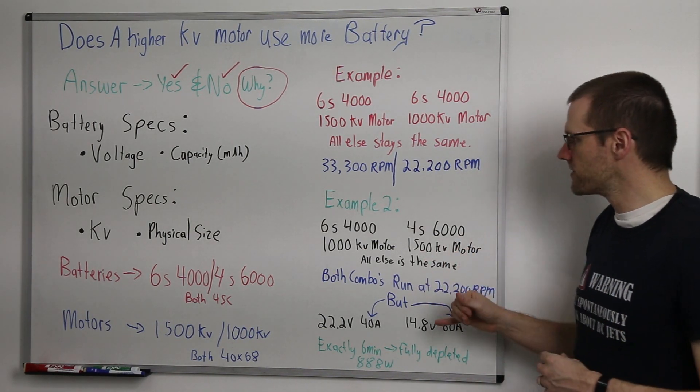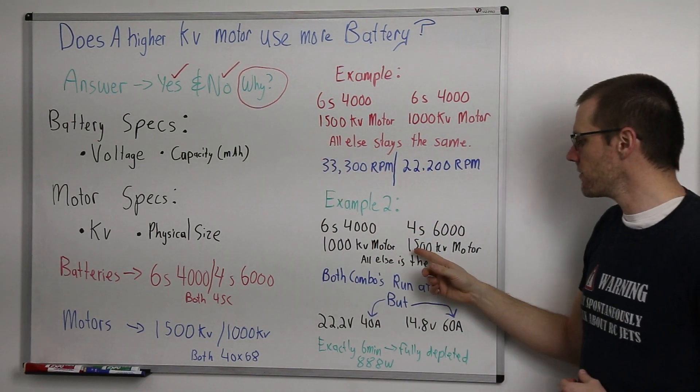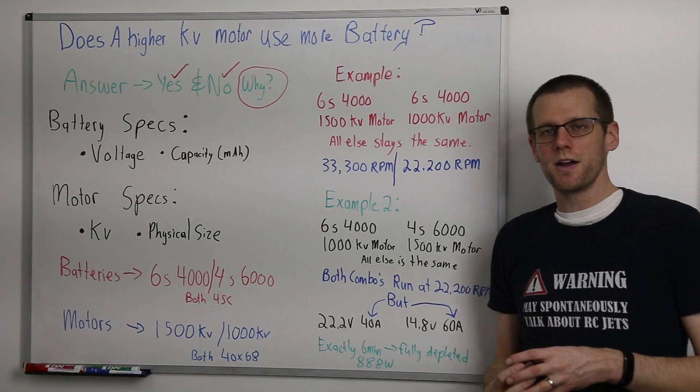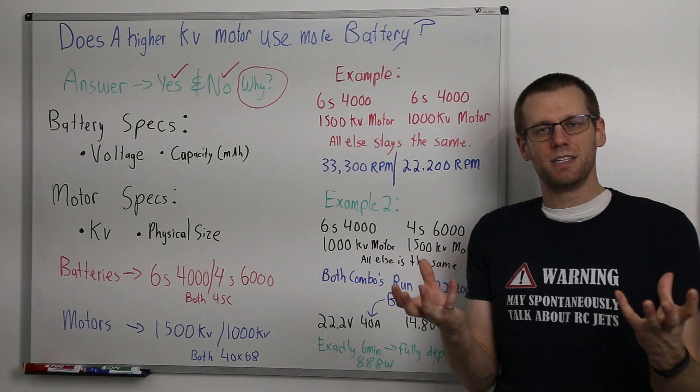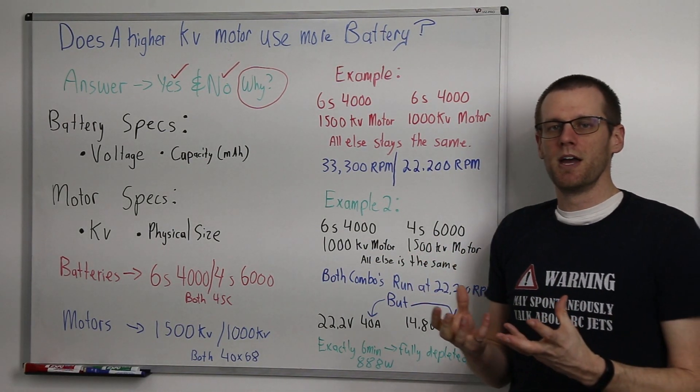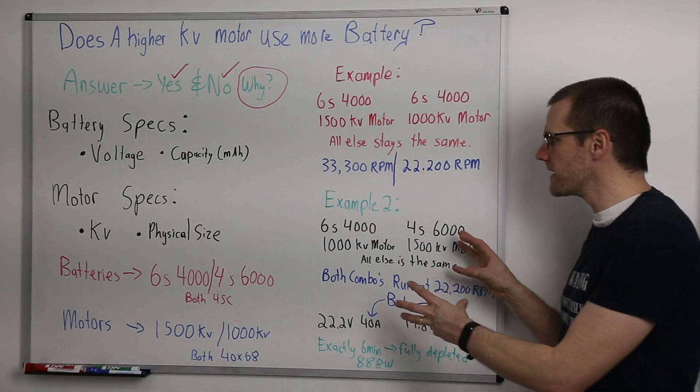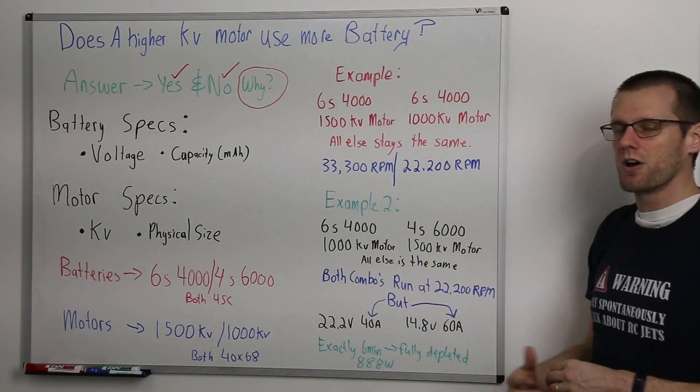Therefore the big answer to the question up here on the board is no. This power system here with a 1500 kV motor is not going to pull more battery power than our 1000 kV motor. We started with two battery packs that had identical amounts of energy and both are going to run out of steam at the exact same time. Now this is ultimately different than our scenario up here is because we're balancing all of the different combinations.